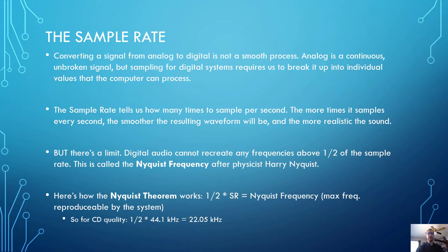The sample rate tells us how many times we're sampling per second. The more times it samples, the smoother the resulting waveform will be, and the more realistic the sound — the closer it will be to analog. But there is also a limit: digital audio cannot recreate any frequencies above one half of the sample rate. This is called the Nyquist frequency, after the physicist Harry Nyquist.